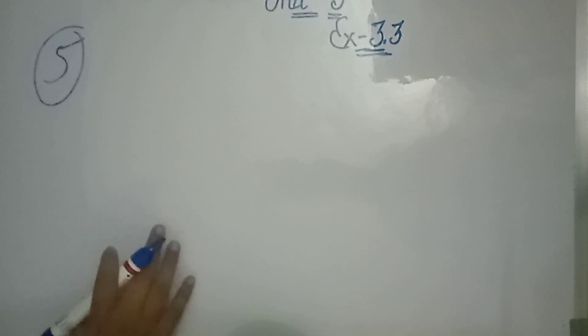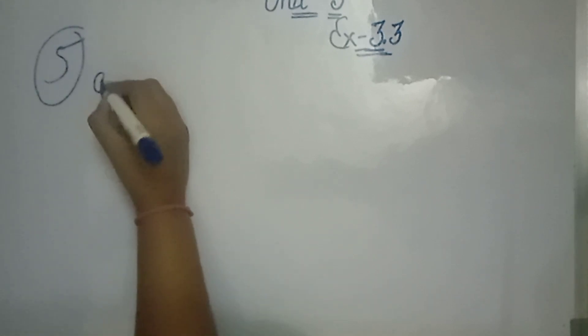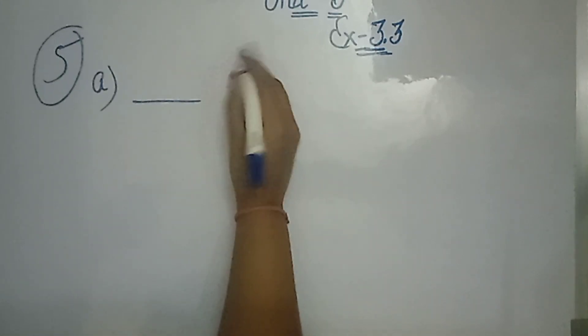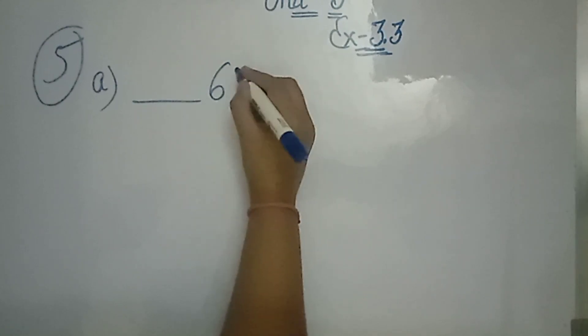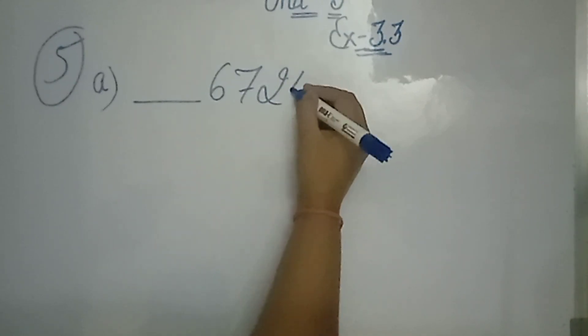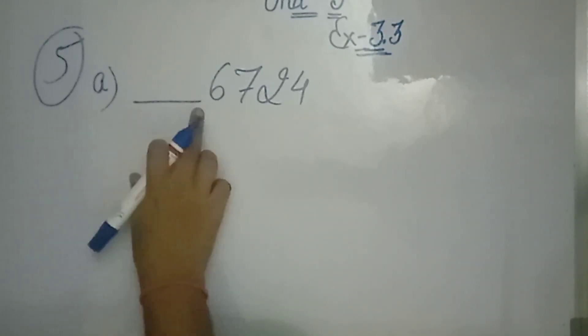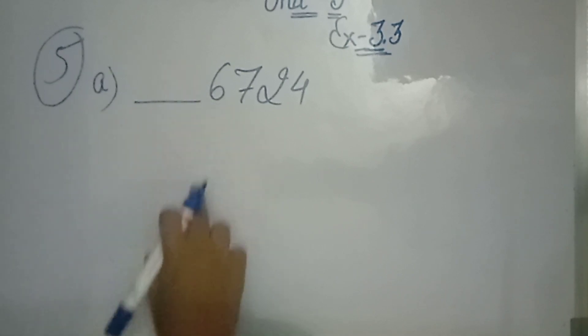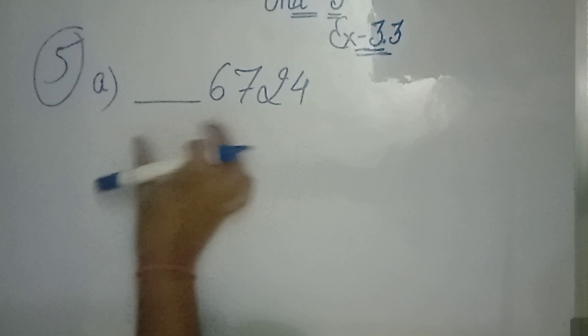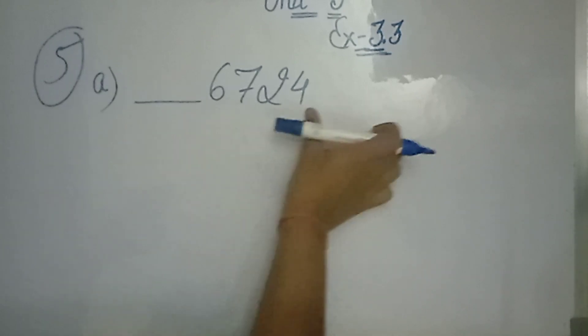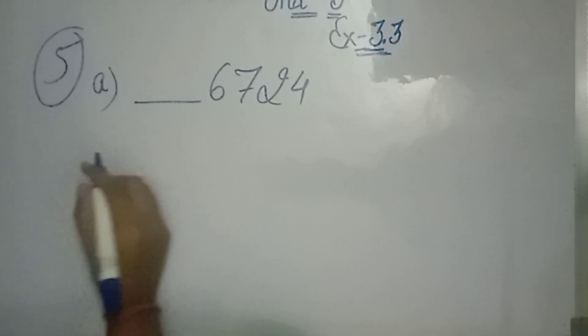We have a blank space. This blank space is called where you need to fill a number. If you fill a number, then the whole number will be divisible. Let's see.